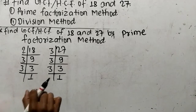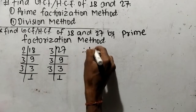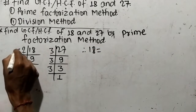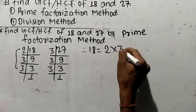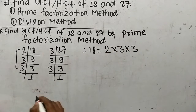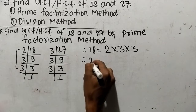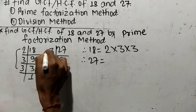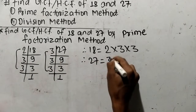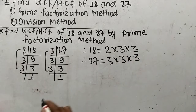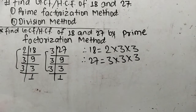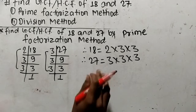From these prime factors we can write: 18 is equal to 2 times 3 times 3. In the same way, 27 is equal to 3 times 3 times 3. So we have written the prime factorizations of both 18 and 27, and now we find out the common factors in these prime factors.